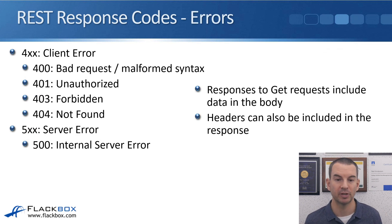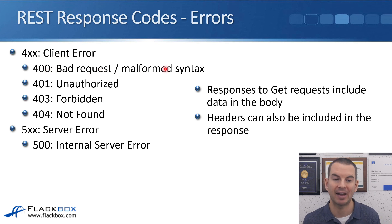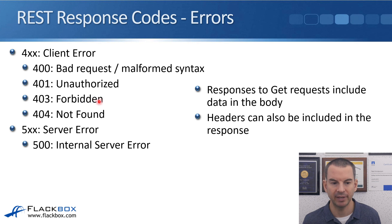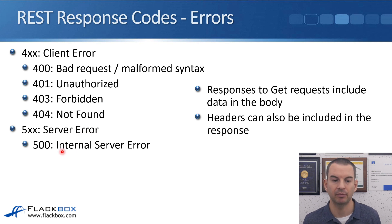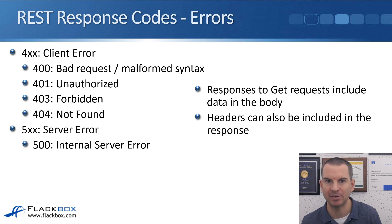Error response codes: anything beginning with 4 is a client error. 400 means a bad request or malformed syntax. 401 is unauthorized — you didn't send valid credentials. 403 is forbidden, also likely due to incorrect credentials. 404 means the resource was not found, often caused by a typo in the URL. A 500 response indicates a server error, such as a 500 Internal Server Error. Responses to GET requests typically include the requested data in the body, and headers may also be included.